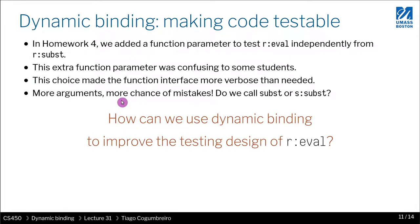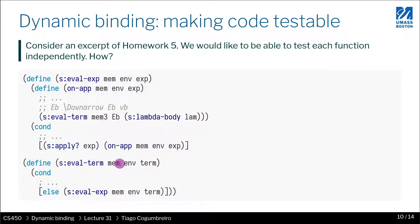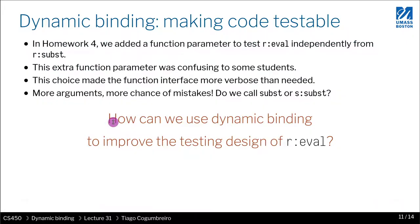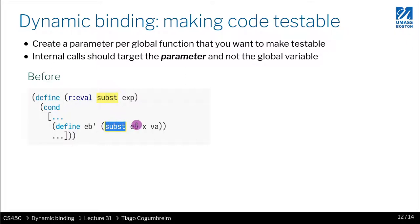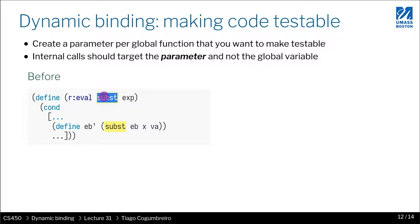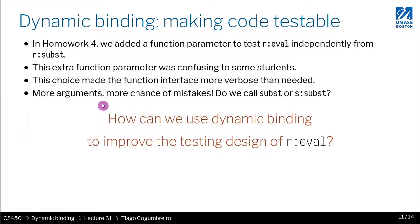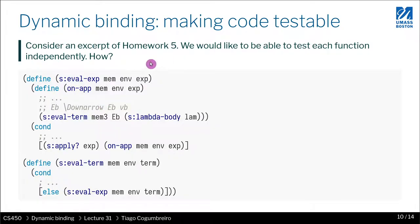And in homework 5, we didn't have a way to do that, because if we just added another parameter, it would become even more complicated. The trade-off is we're basically making calling reval more complicated. You had to learn about this extra parameter, what it was, how to use it — versus something that is simpler to use, which is homework 5. There's no extra parameter, what you see is what you get, but it is way harder to test.